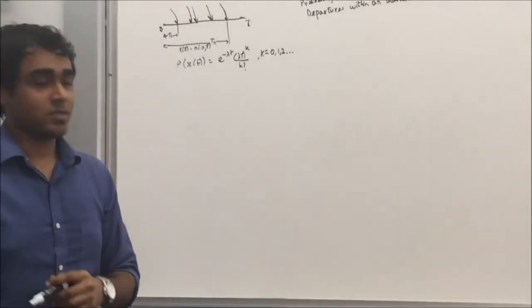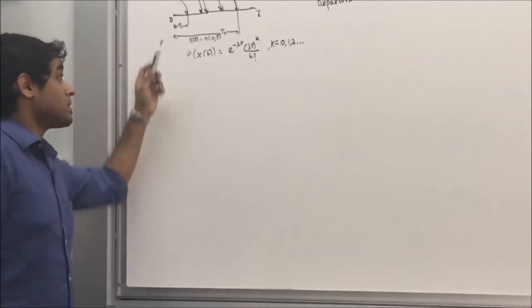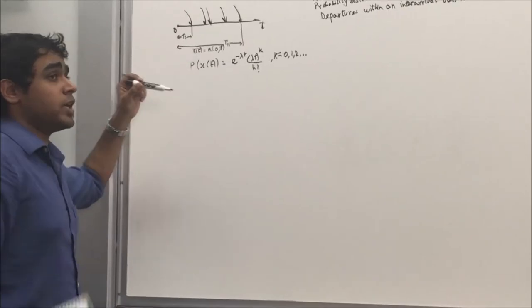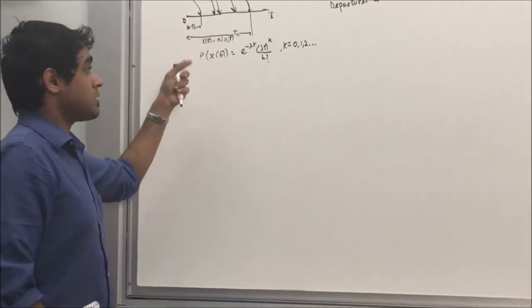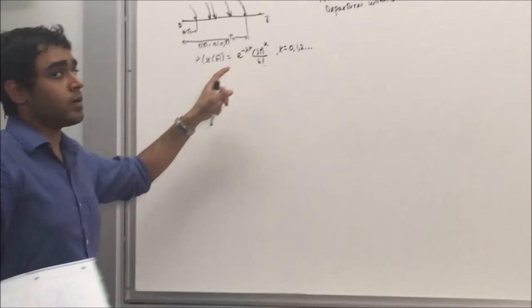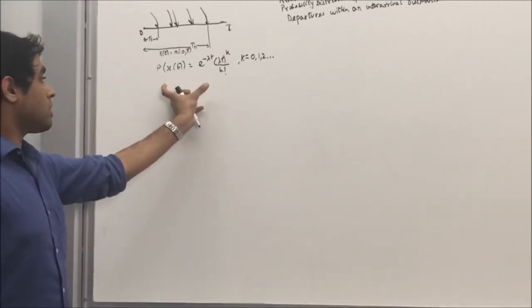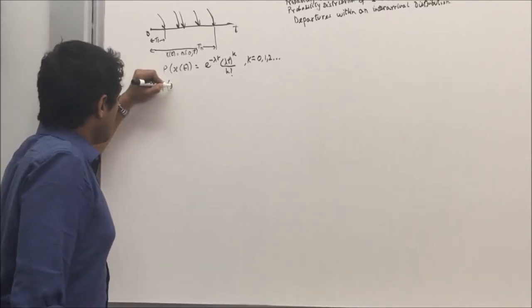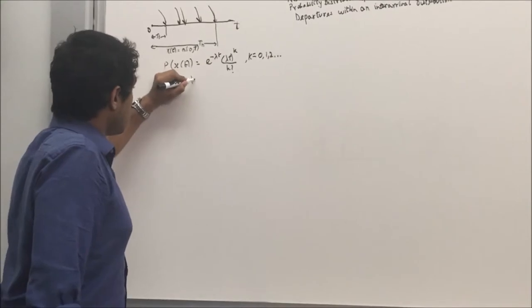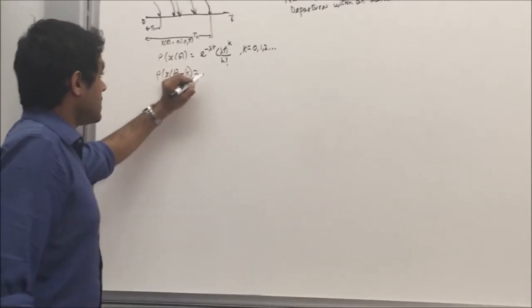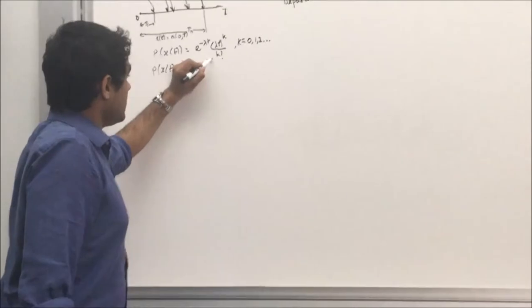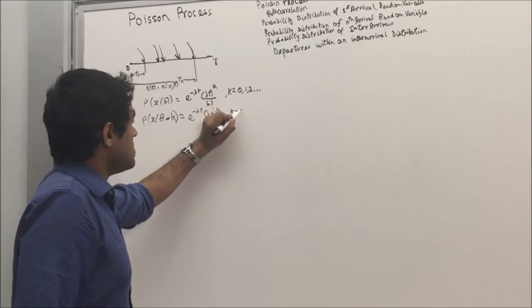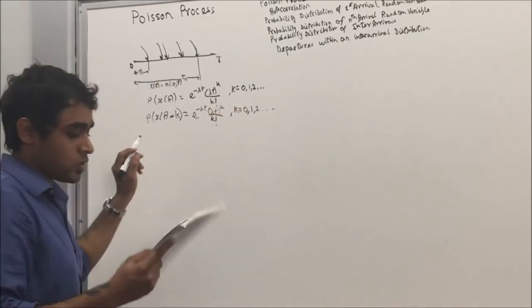Today we will be discussing Poisson Processes. A Poisson process is an arrival or departure process where the number of arrivals in an interval, say 0 to t, represents a Poisson random variable. The density function for a Poisson random variable is given by: P(X(t) = k) = e^(−λt) · (λt)^k / k!, where k = 0, 1, 2, and so on.